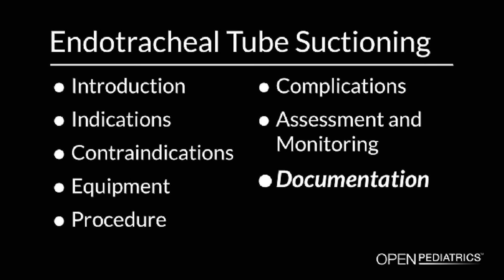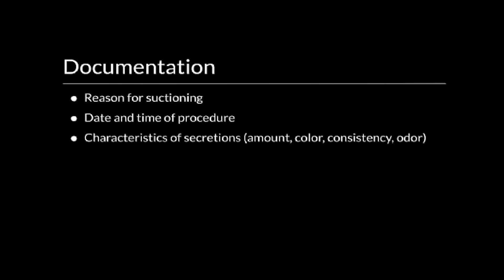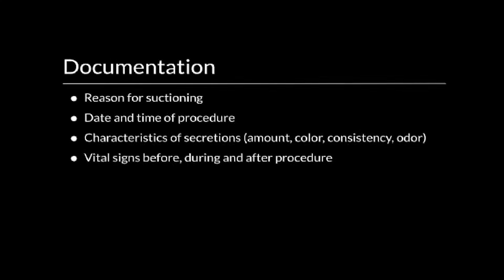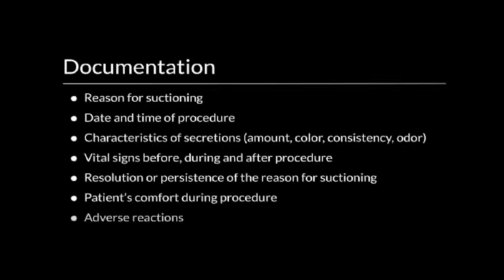Documentation. Following endotracheal tube suctioning, you should document the following information in the patient's medical record: the reason for suctioning (for example, the presence of secretions), the date and time of the procedure, the characteristics of the secretions including amount, color, consistency, and odor, the vital signs before, during, and after the procedure, the resolution or persistence of the reason for suctioning, the patient's comfort during the procedure, and any adverse reactions.